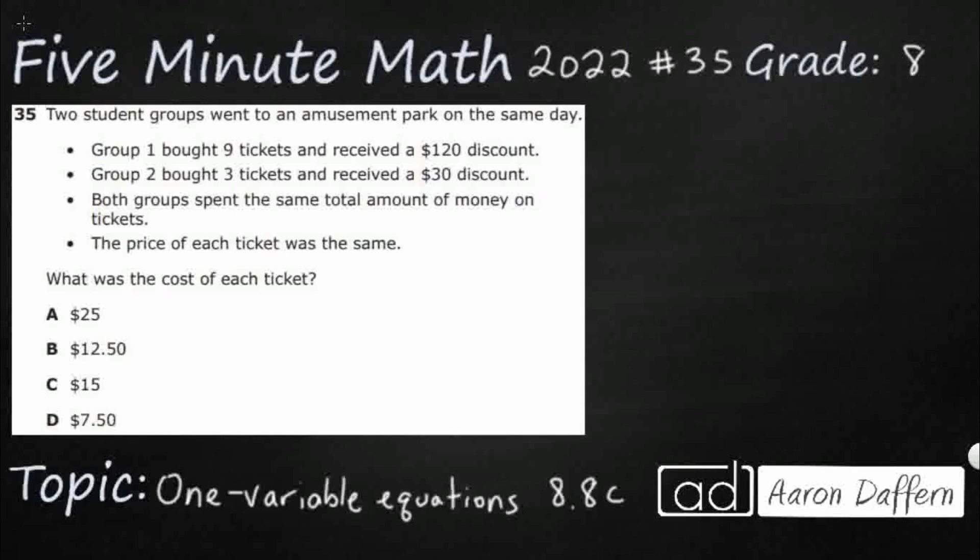So we've got two student groups going to an amusement park. Group one is going to buy nine tickets and receive a $120 discount. That's a big discount. Group two is going to buy only three tickets and they get a much smaller discount. Both groups spent the same total amount of money. That's very important. And the price of each ticket was the same.